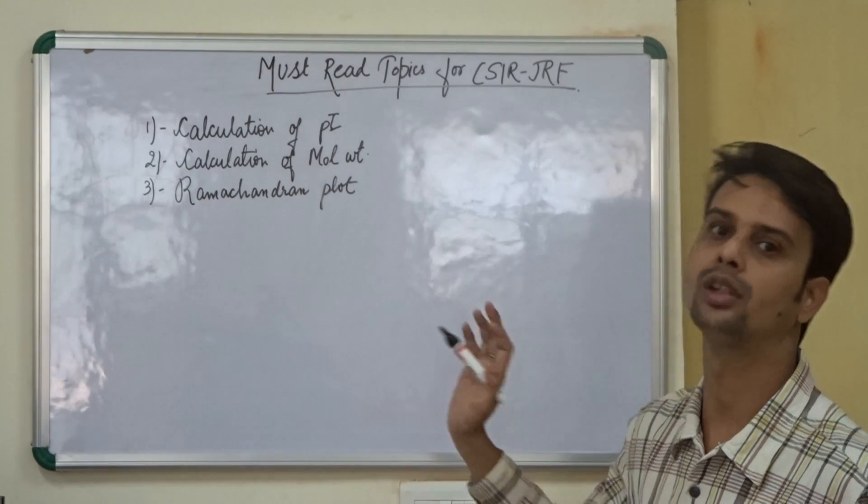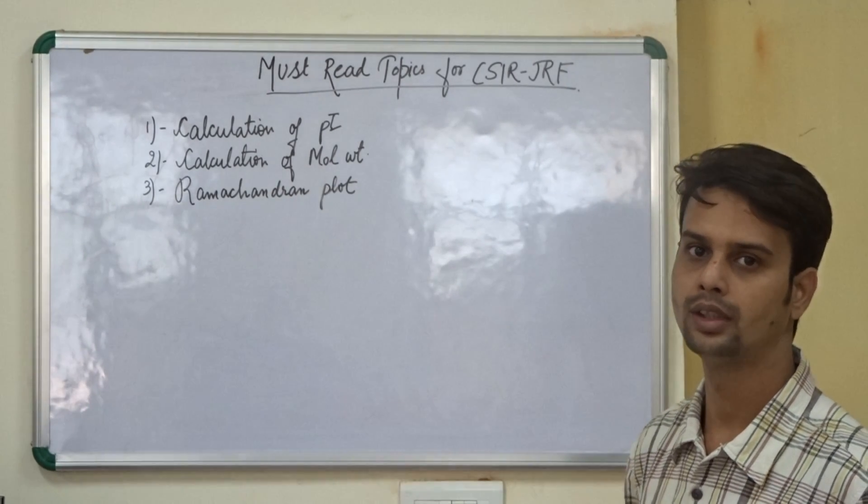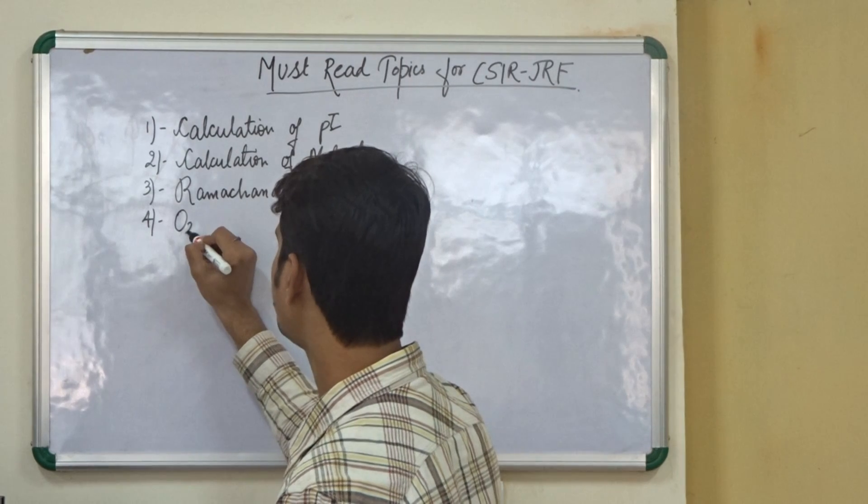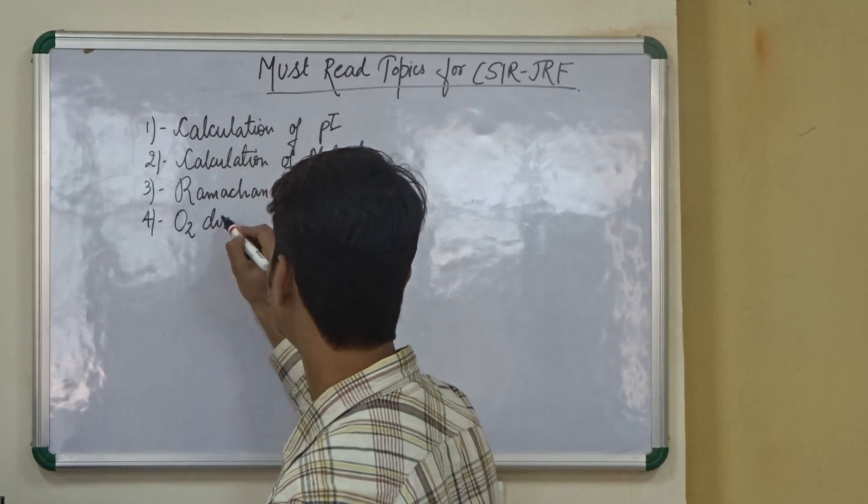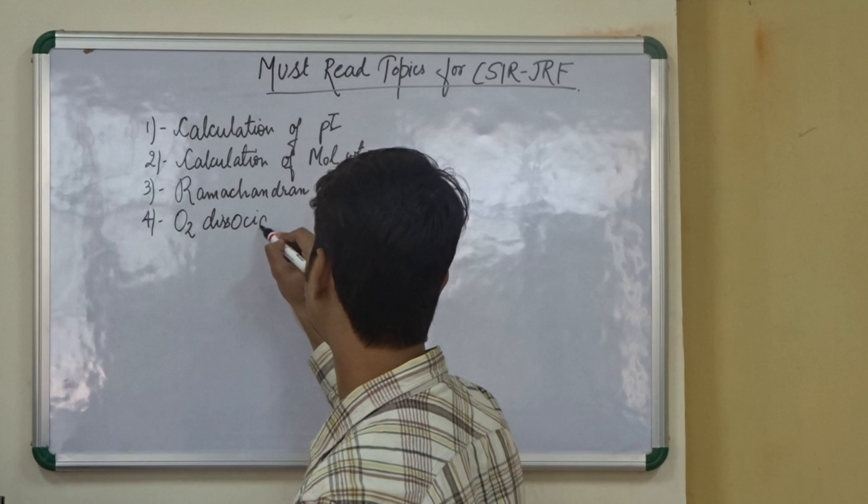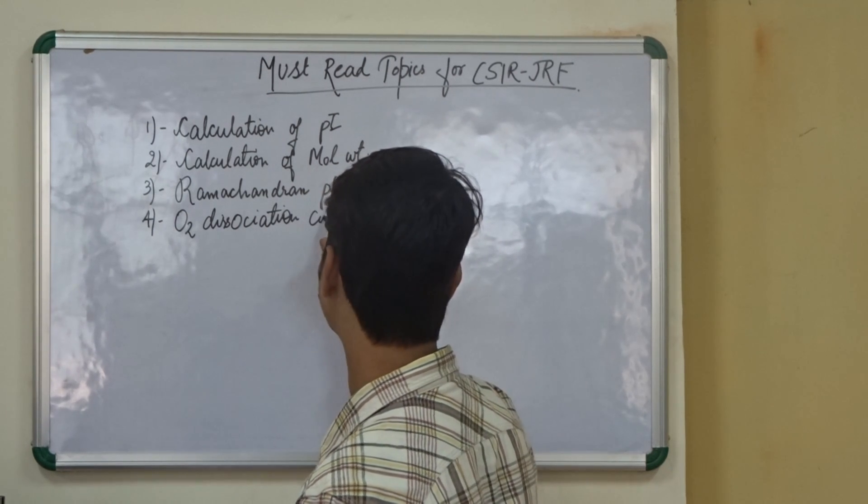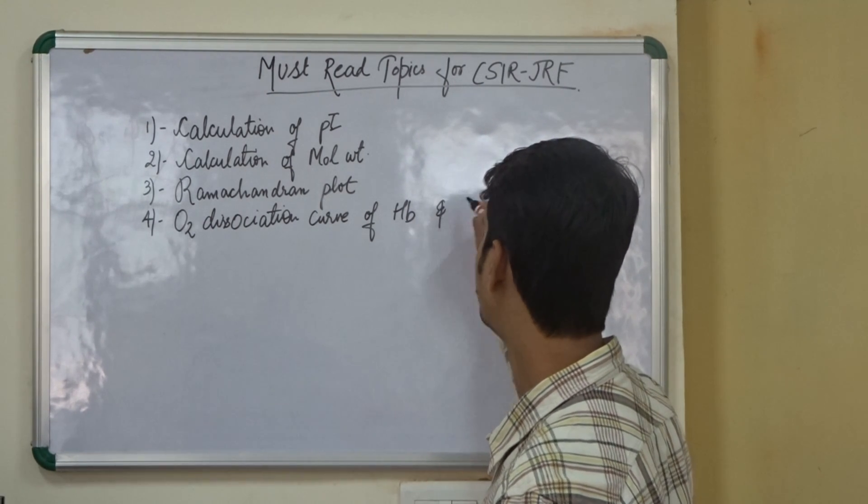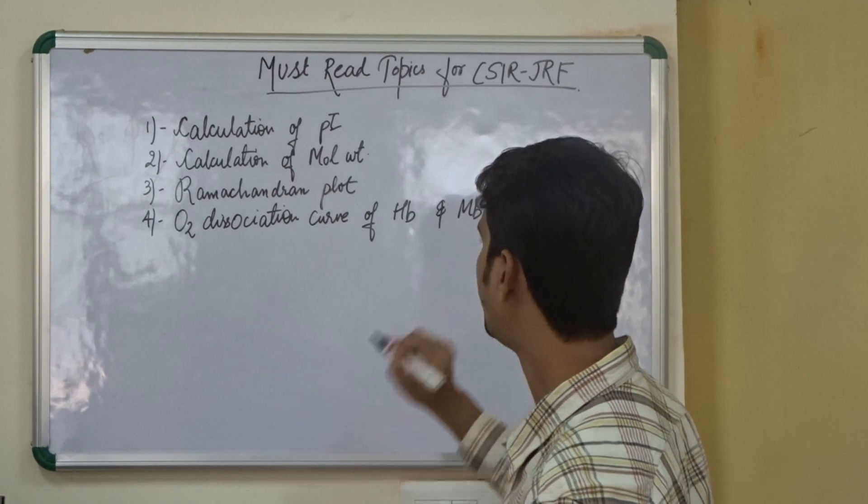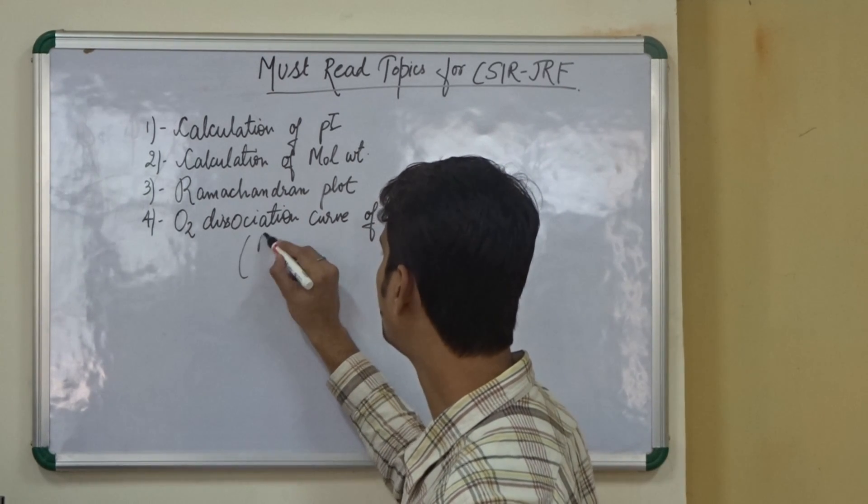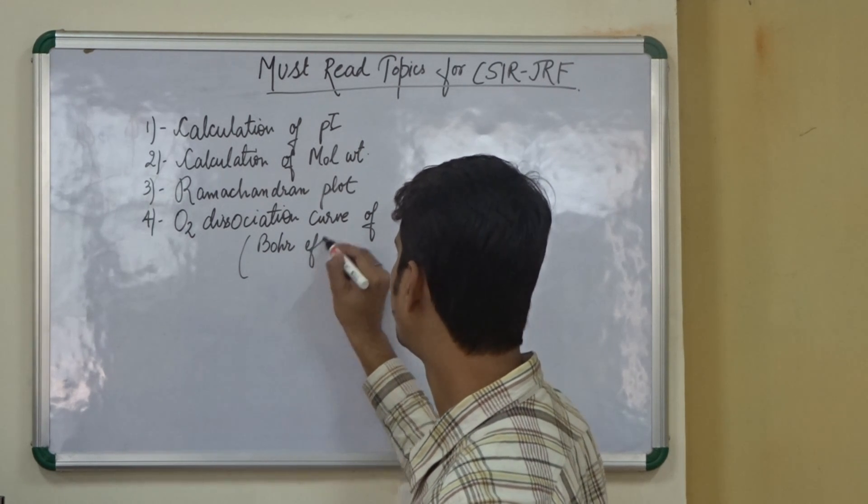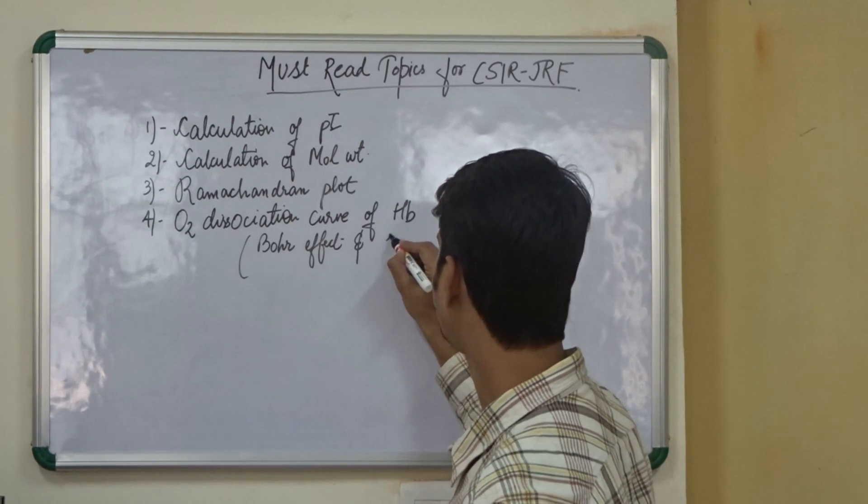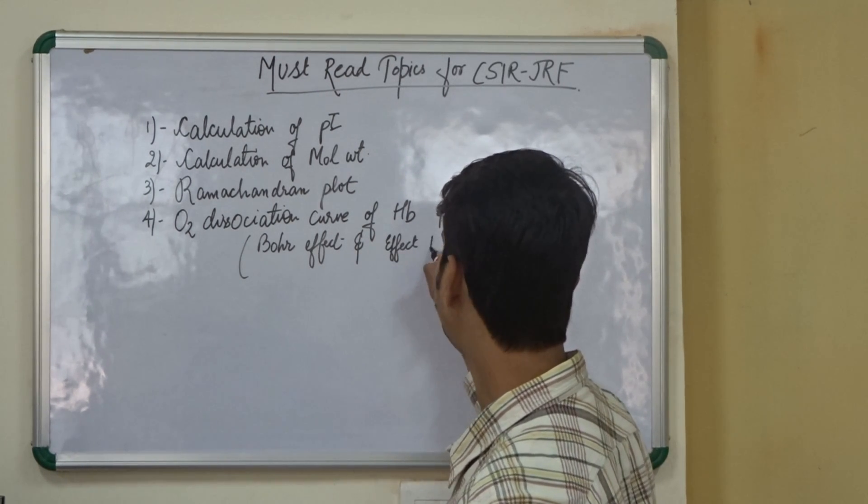The third important topic from this unit is Ramachandran plot. We need to know completely and thoroughly about this Ramachandran plot, the values. The next important topic is oxygen dissociation curve of hemoglobin as well as myoglobin. And in this topic, we need to know about the Bohr effect as well as the effect of BPG.